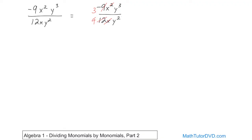For y squared and y cubed, both of these y's will cancel. I could put a 1 here — 3 minus 2 is 1 — but I don't have to. The final answer still has a negative sign, a 3, and then reading what's left: x times y on top, and just 4 on the bottom. So the answer is negative 3xy over 4.